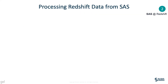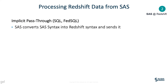Scenario number two: processing Redshift data in place from SAS — this is about pushing the processing to where the data is. SAS provides multiple ways to achieve this, with the advantages of leveraging the compute infrastructure of Redshift and minimizing data movement. We have implicit pass-through with PROC SQL or PROC FEDSQL, where SAS converts SAS SQL proprietary syntax into Redshift SQL syntax and sends it to Redshift for processing. The result is sent back to SAS, and SAS is little or not used for the processing. This allows users to keep using SAS SQL syntax, or tools like SAS Enterprise Guide, while leveraging the power of their Redshift instance transparently.